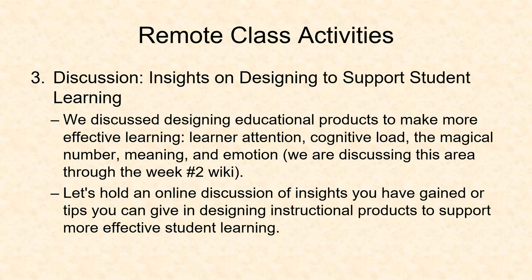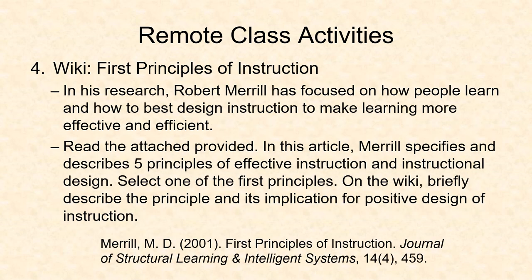In that paper, briefly describe the three types of cognitive load described in the article, then choose three of the design principles also described in the article and describe what each one means, suggesting how an instructor can assimilate that principle into designs of educational products — in other words, how can you practically use this when designing instructional products? You do not have to cite any additional resources; simply use the content in the article. The third activity will be a discussion: Insights on Designing to Support Student Learning, where we discuss how incorporating information from brain research — learner attention, cognitive load, the magical number, meaning, and emotion — leads to more effective learning.